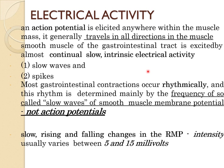Regarding the electrical activity of the GI tract: an action potential elicited anywhere within the muscle mass generally travels in all directions. Smooth muscle of the GI tract is excited by almost continual slow intrinsic electrical activity, which can be divided into slow waves and spikes. Most GI contractions occur rhythmically, determined mainly by the frequency of so-called slow waves of smooth muscle membrane potential — not action potentials. These slow rising and falling changes in resting membrane potential usually vary between 5 and 15 millivolts, probably due to slow undulation of the sodium-potassium pump activity.